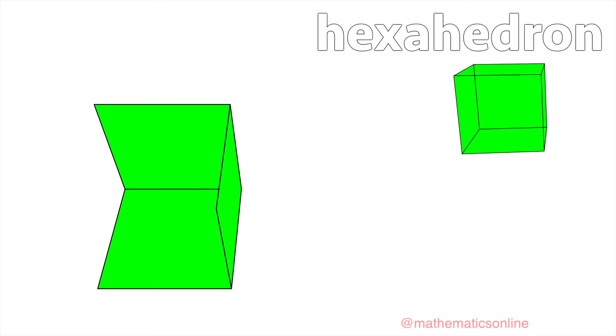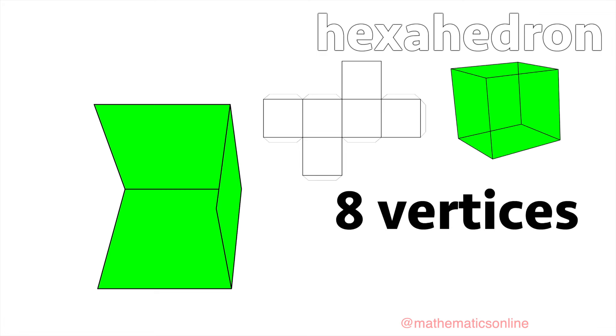The next regular polygon we will use is the square. We'll start off with three squares to form a vertex. When we close the gap, we form the hexahedron or cube. The hexahedron consists of six square faces. It has eight vertices and twelve edges.